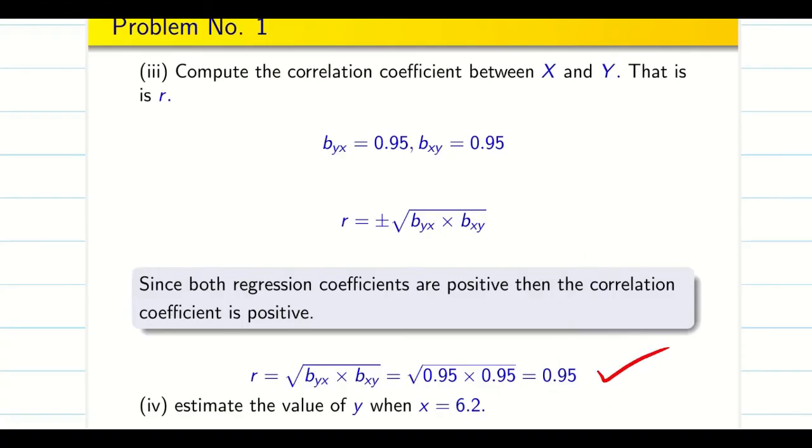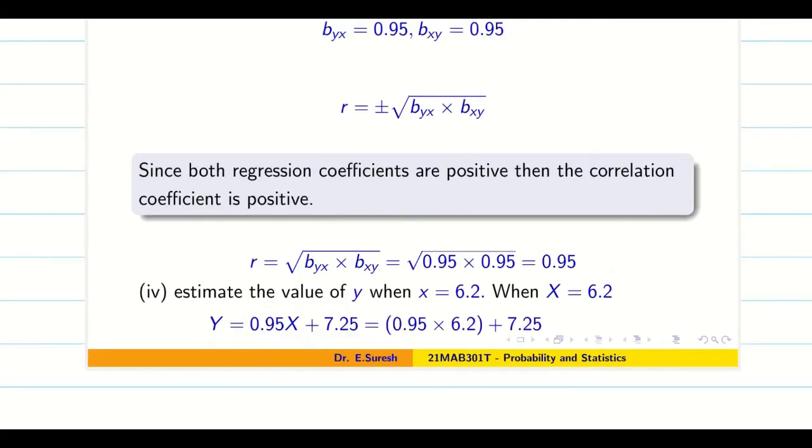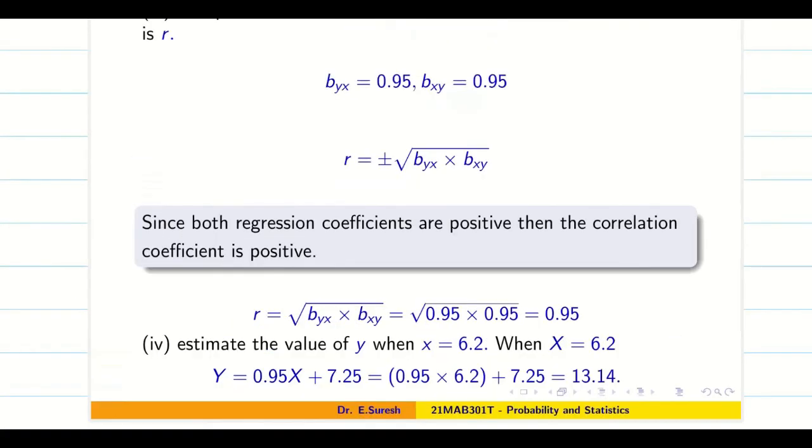Next we have to find estimated value of y when x is equal to 6.2. We found the regression equation (Y - Ȳ) = byx(X - X̄). Since we have to find both the regression lines y on x and x on y, since they are telling to estimate x equal to 6.2, the corresponding y value, I am going to take the regression equation y on x. This is the regression equation. Now let us substitute x equal to 6.2, and we will get the value of corresponding y, that is 13.4. Therefore, when x equals 6.2, then y is equal to 13.4.